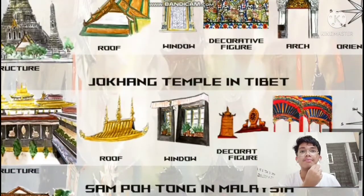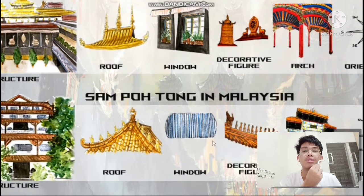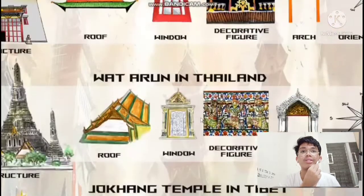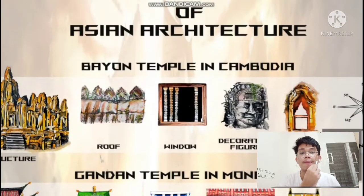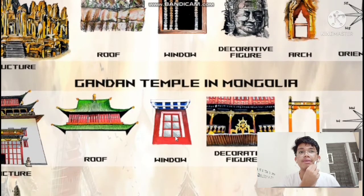The window in Jokhang Temple features a black trapezoidal frame in Tibetan style called Baka. The window in Sampo Thong is a stadium oval shape with wooden window grills. The window in Bayon Temple opens in only one direction — the east. On the other three sides, it features fake or blind windows. In Ganden Temple, the windows are primarily decorated with a ladder-shaped frame painted in red, and the upper part consists of overhanging cornices in three layers.